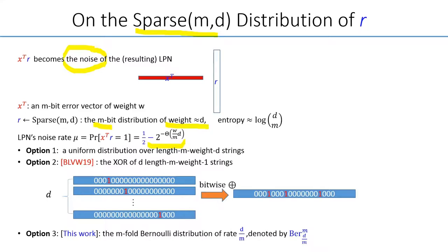There are a few candidates about this sparse distribution. Quite naturally, we can sample it from all strings of length M and Hamming weight D. Or alternatively, we can take D random strings, each of them has Hamming weight exactly 1, and we then take their XOR sum. Another option is that we can sample it from an M-fold Bernoulli distribution of rate D over M such that the expected Hamming weight of R is D.